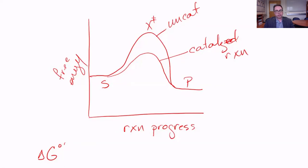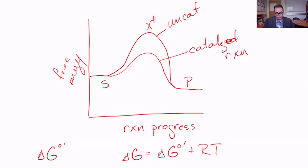However, we're rarely under standard conditions, so the non-standard change in free energy actually describes whether the reaction is spontaneous under more common conditions. The non-standard ΔG is related to ΔG°' through the modifying factor RT·ln([products]/[reactants]), where R is the universal gas constant and T is temperature. The non-standard ΔG depends on two things: the nature of the reactants characterized by ΔG°', and the concentration of reactants and products. At equilibrium, the non-standard ΔG would be zero, and the ratio of products to reactants at equilibrium is described by the equilibrium constant K.